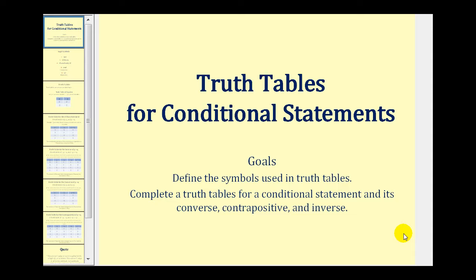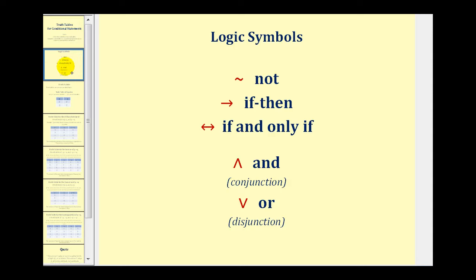Welcome to a lesson on truth tables for conditional statements. Here are the most common symbols used for logic and truth tables: negation or not, if-then, if and only if, conjunction or and, and disjunction or or.